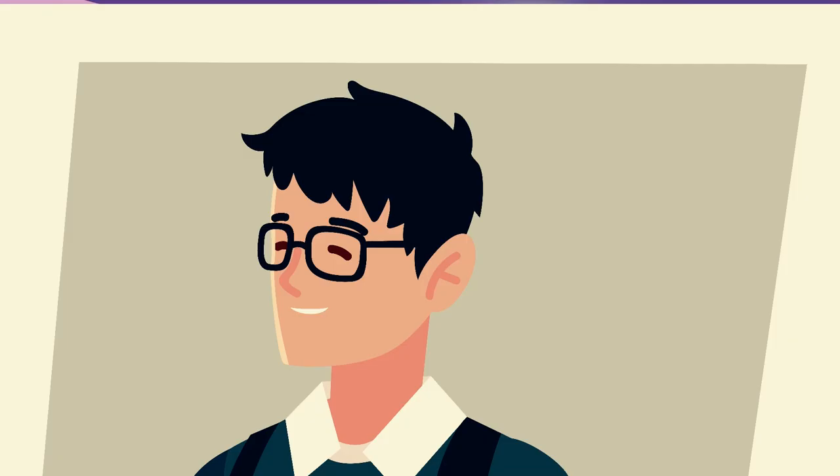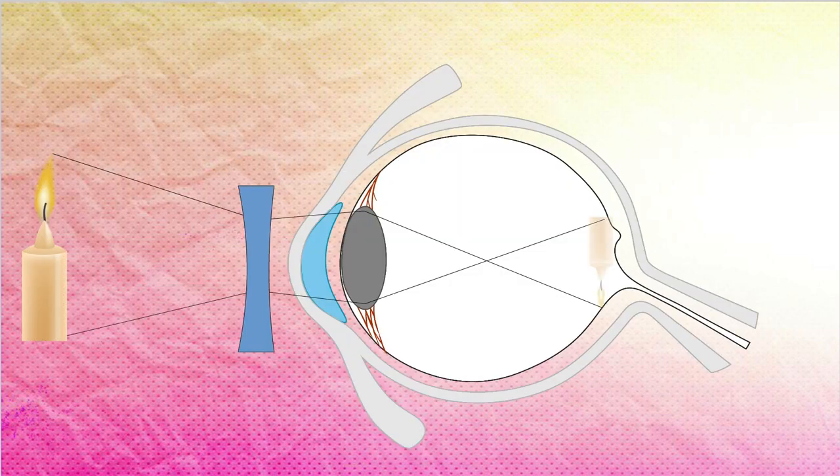We use a concave lens to correct this defect. A concave lens is a divergent lens, meaning it diverges rays passing through it in such a way that the image forms on the retina.